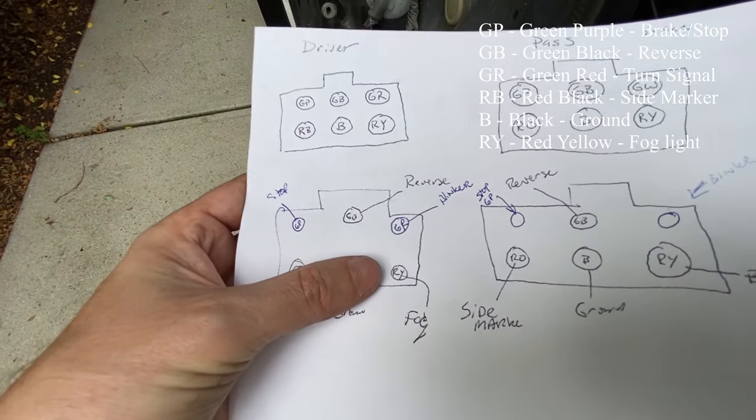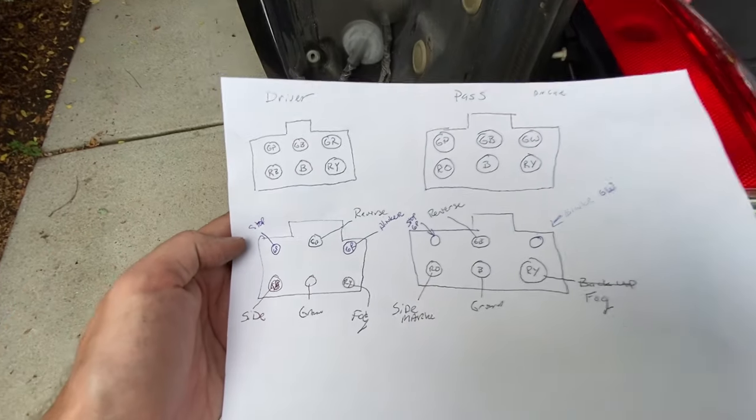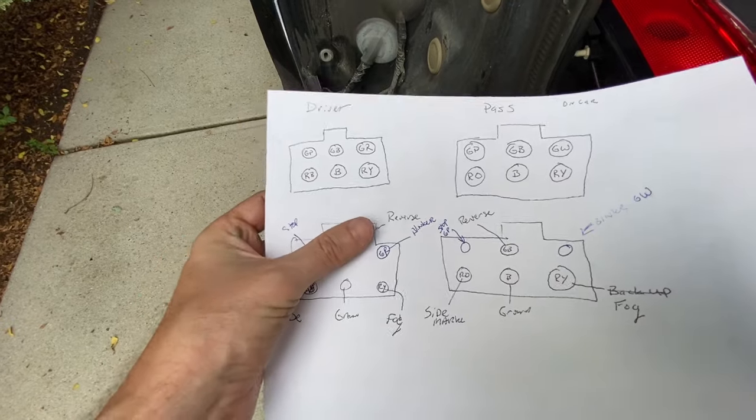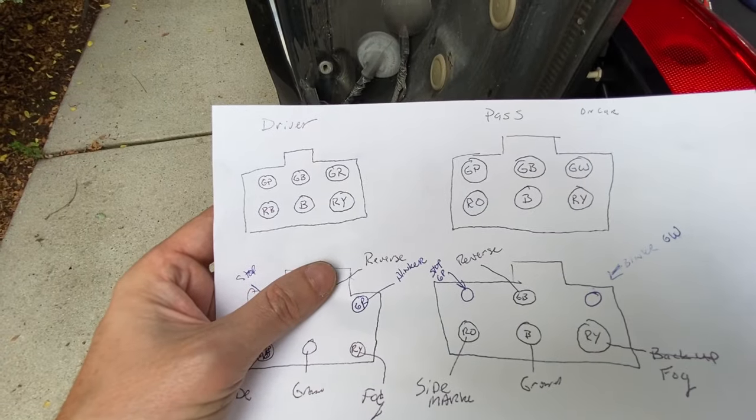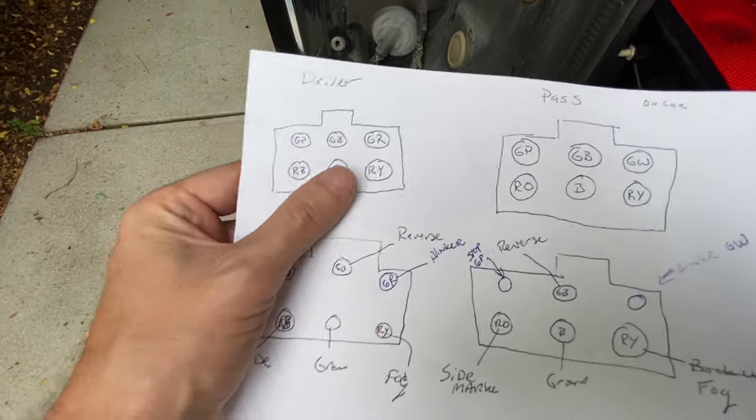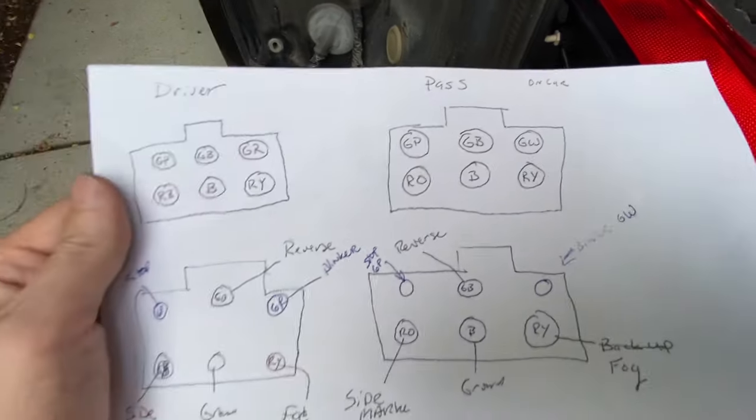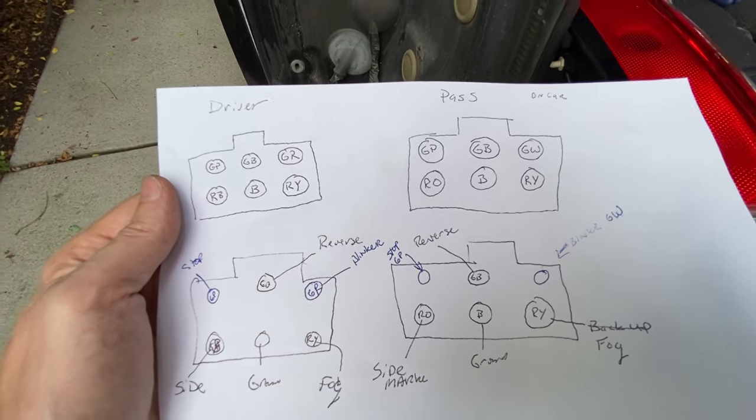The only ones that are really different is red-black versus red-orange, and green-red versus green-white. Those are the differences between your side marker, which could be linked—I mean, they're just on at the same time.